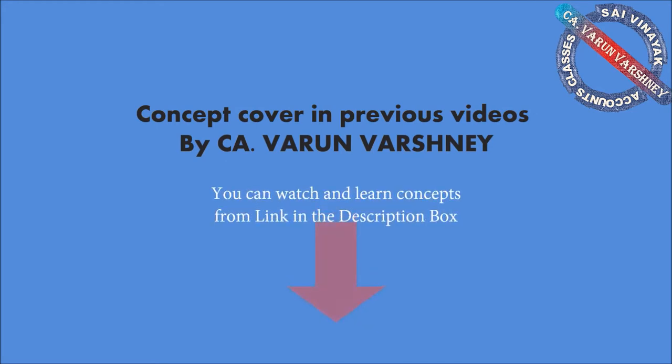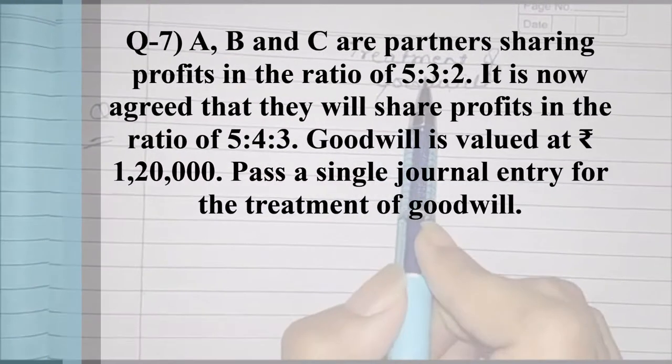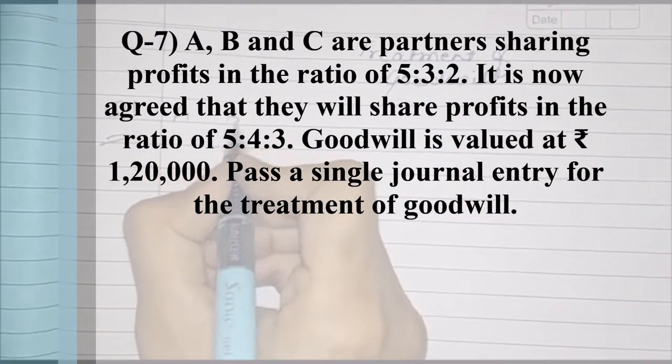I am going to solve treatment of goodwill. The question is: A, B, and C are partners whose old profit sharing ratio is 5:3:2.